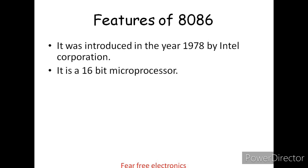The 8086 is the first 16-bit microprocessor. Before the 8086, processors like the 8085 and 8080 were all 8-bit microprocessors. The 8086 is the first successful 16-bit microprocessor.